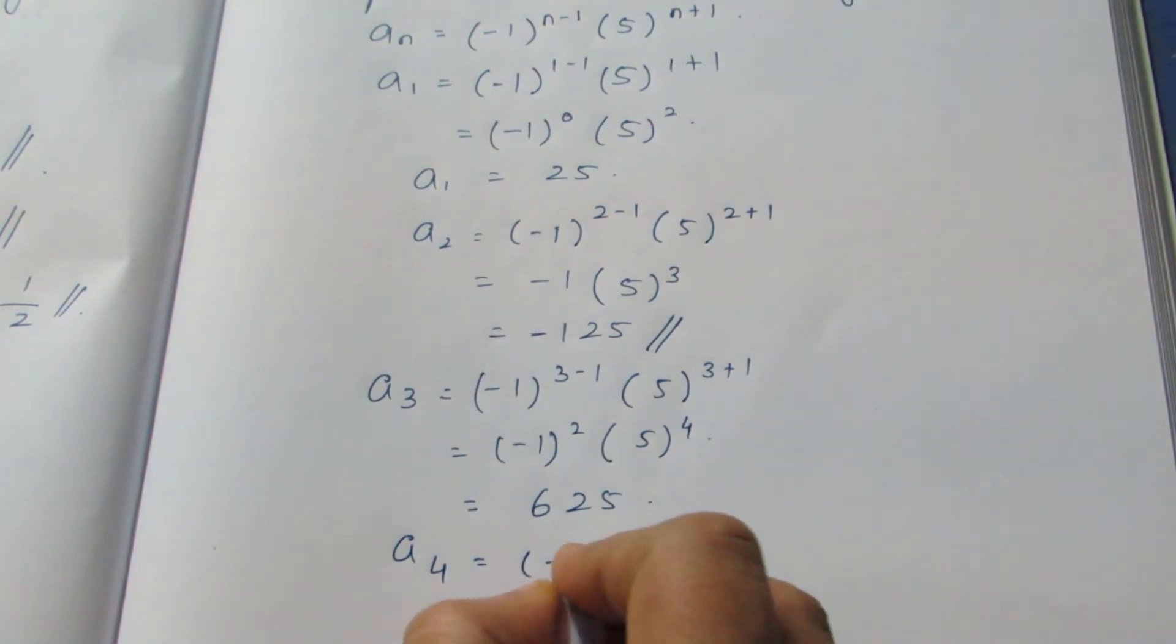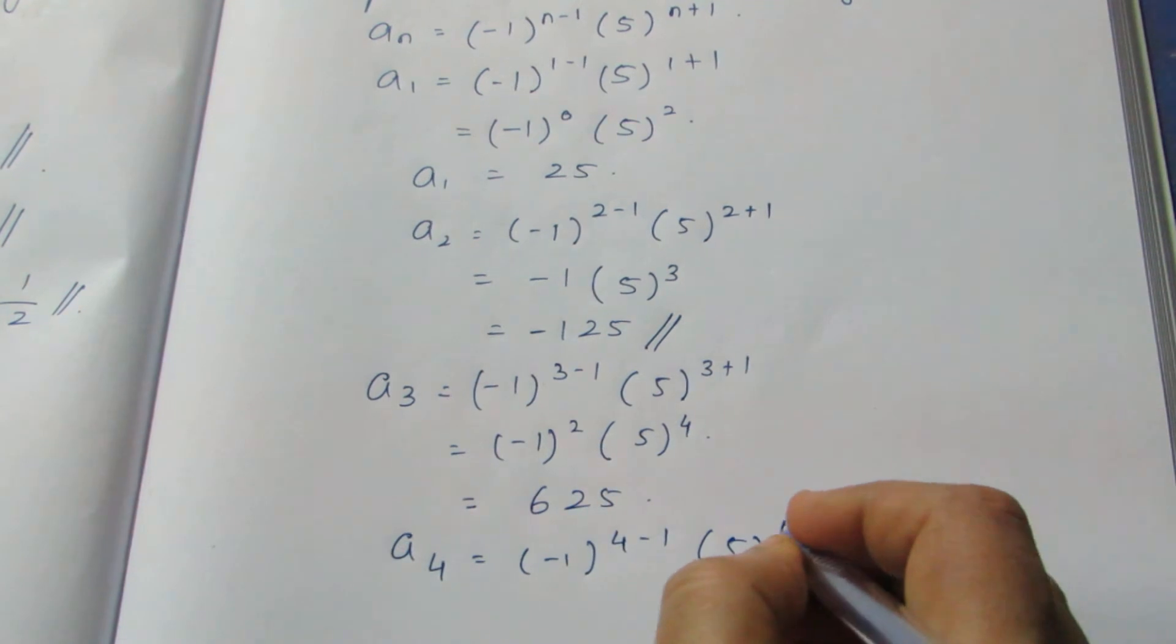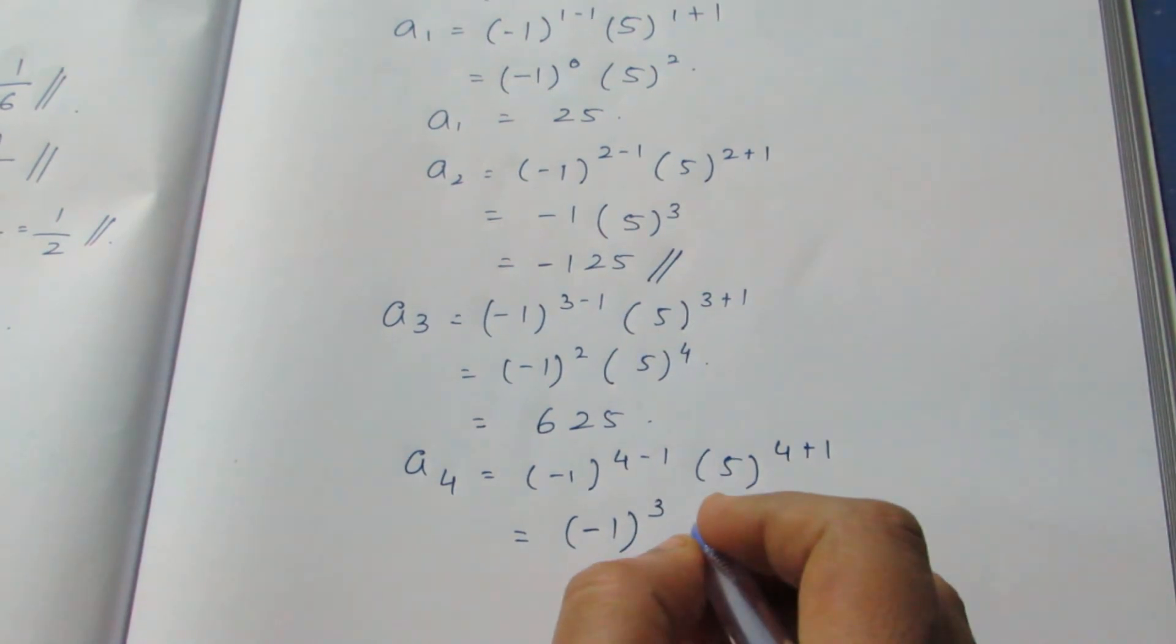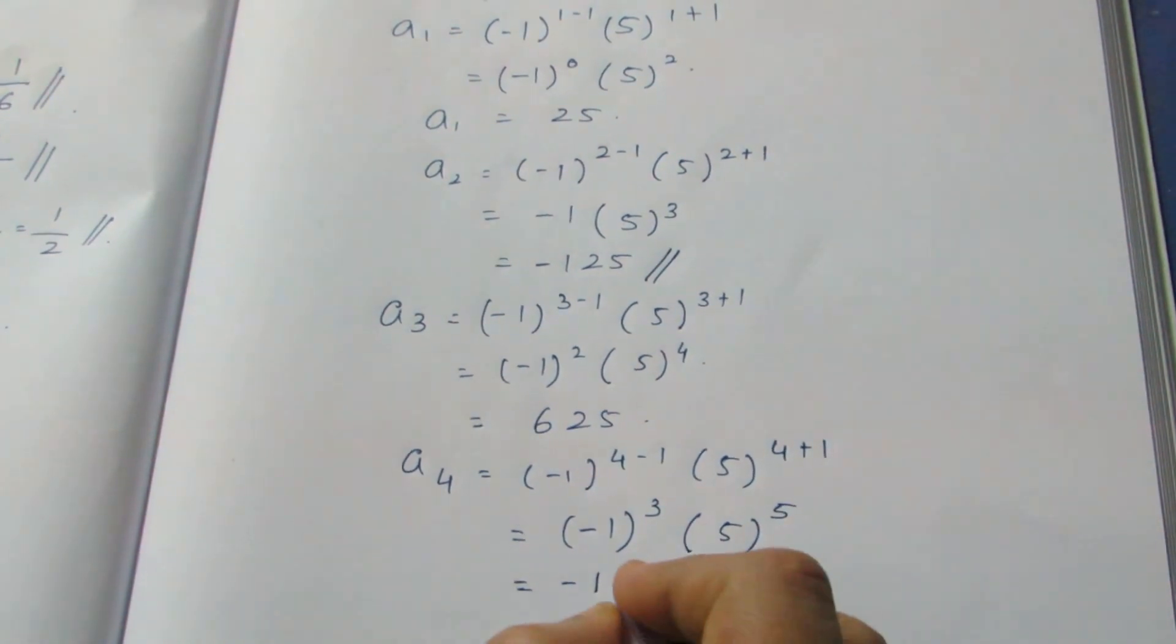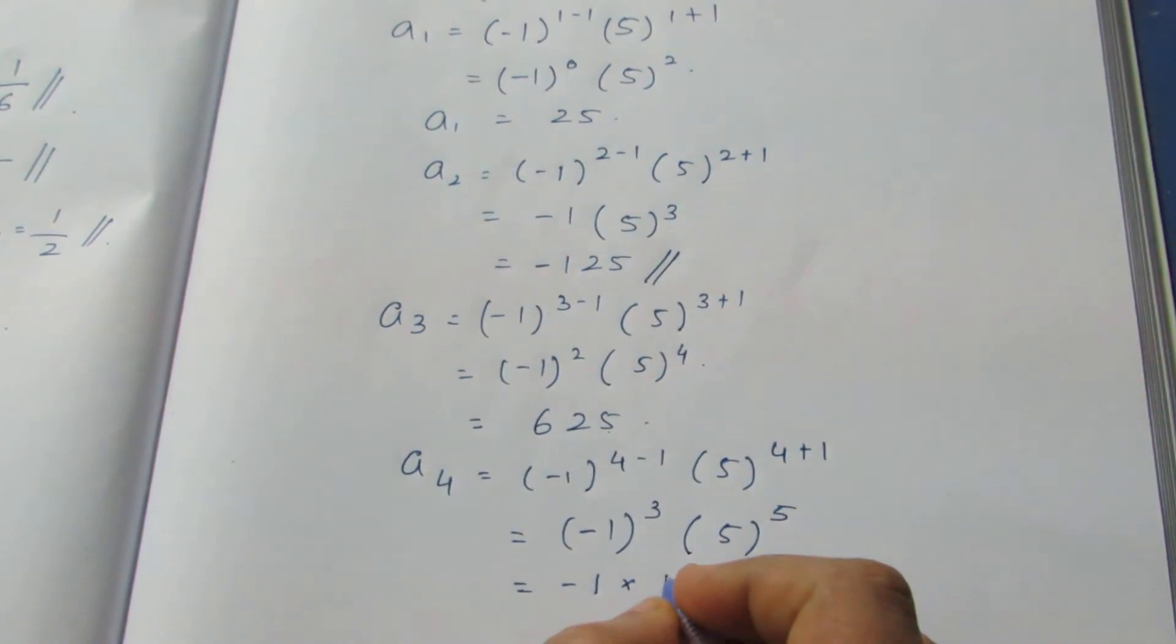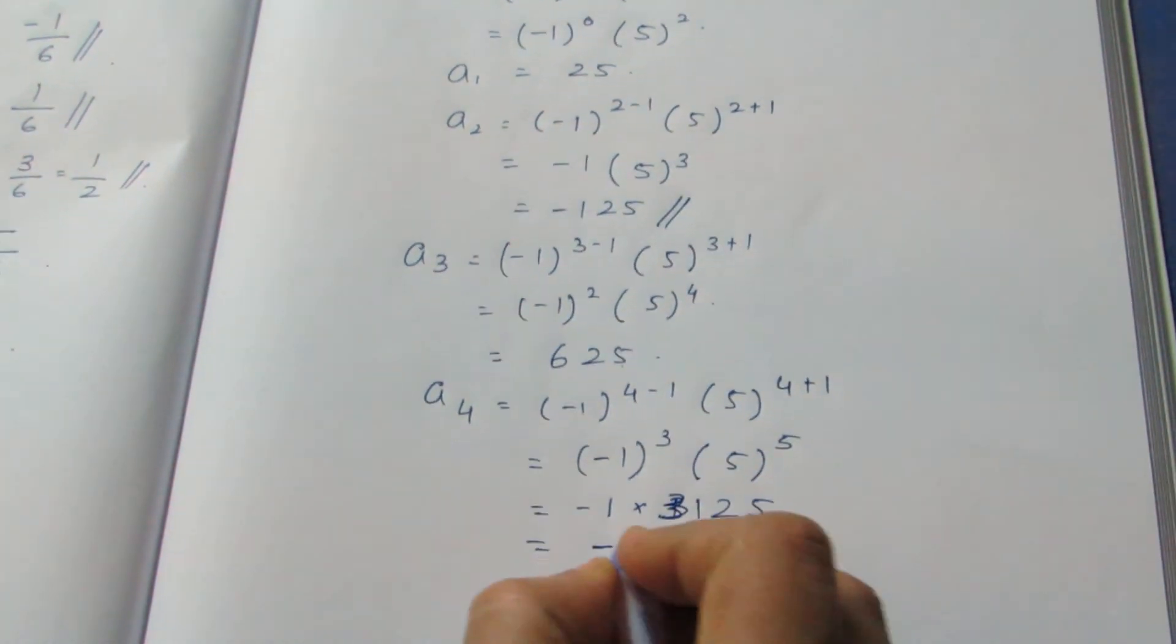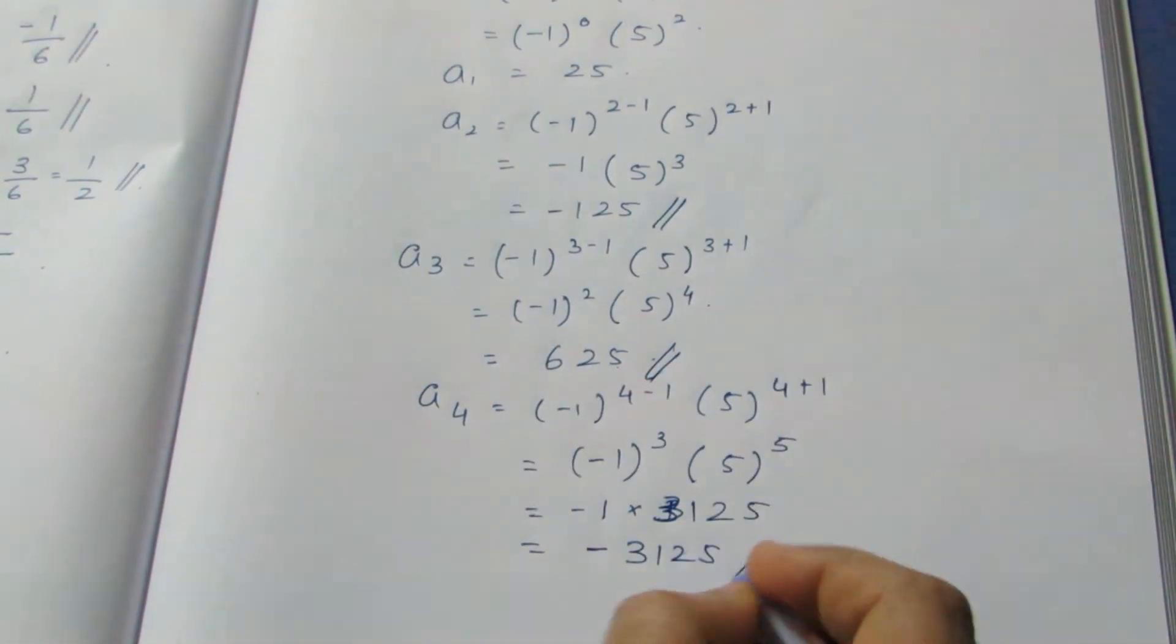a_4: (-1)^(4-1) times 5^(4+1). This becomes (-1)^3 which is -1, into 5^5. Here it becomes -1 into 625 times 5, which will become 3125. So into -1, this becomes -3125. So this is your third and this is your fourth.